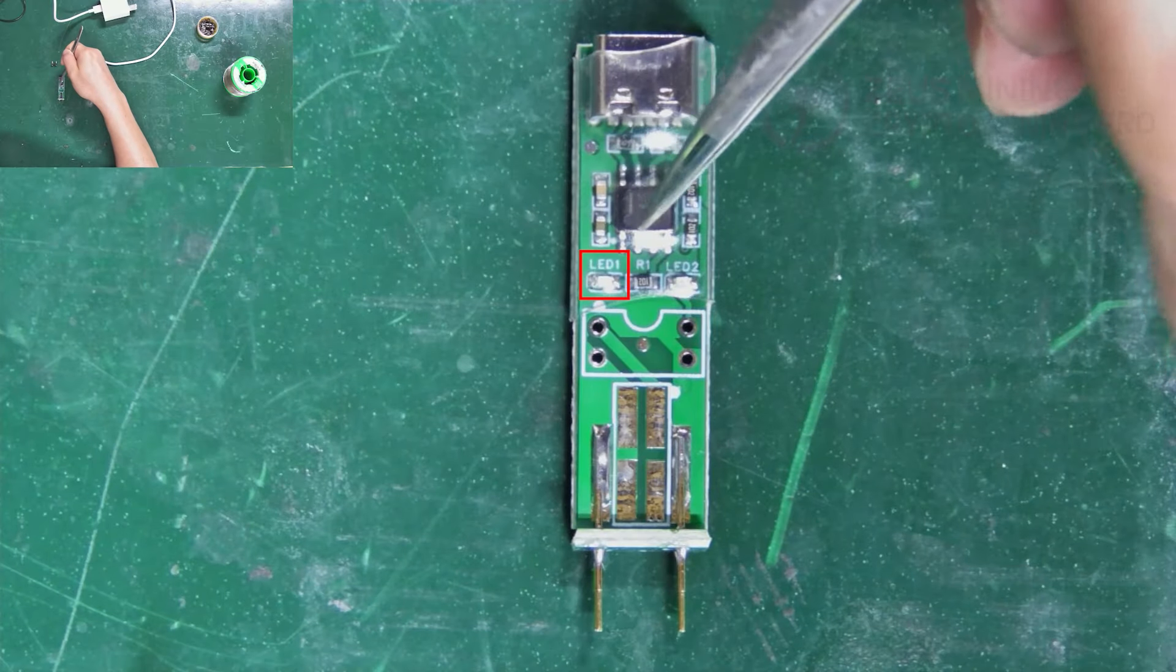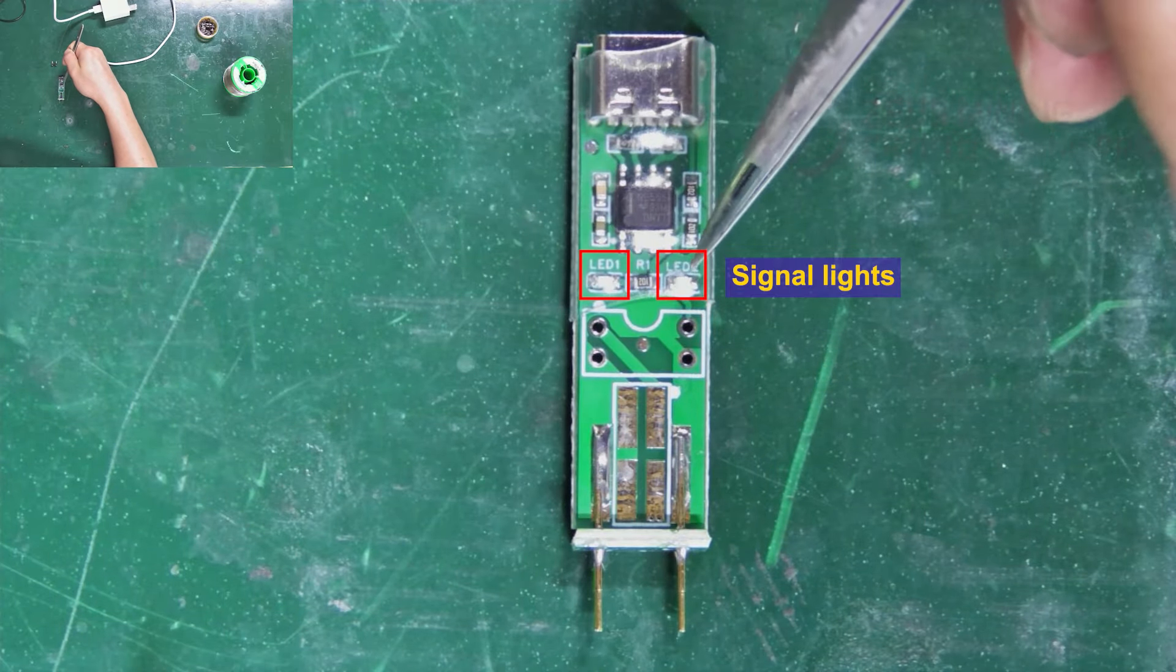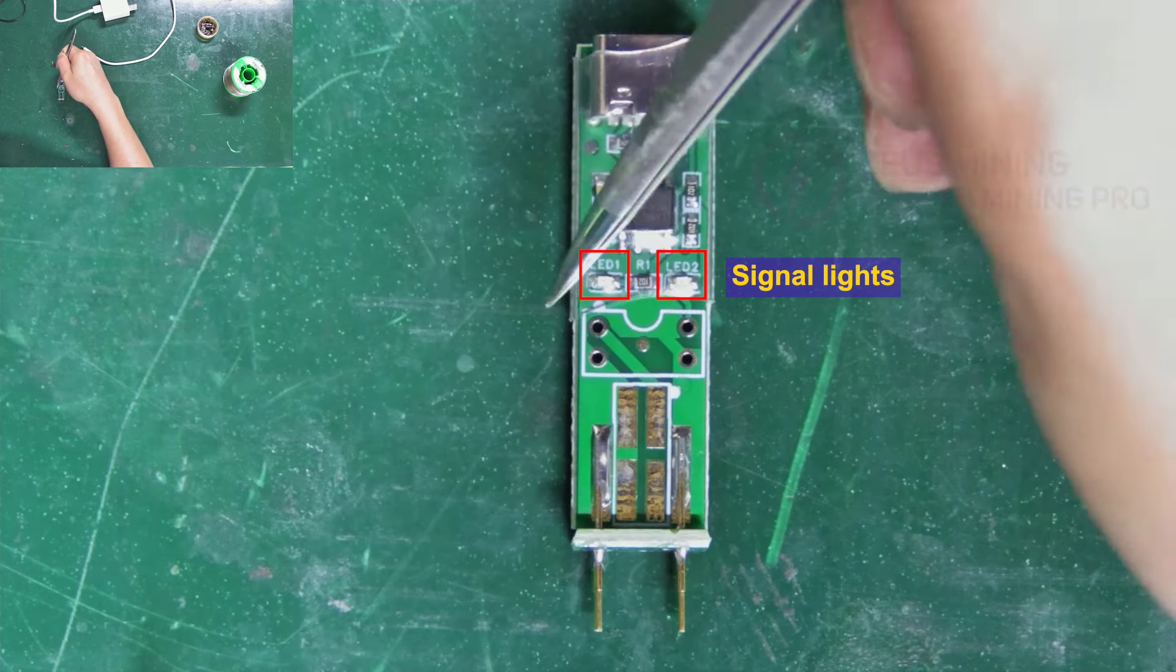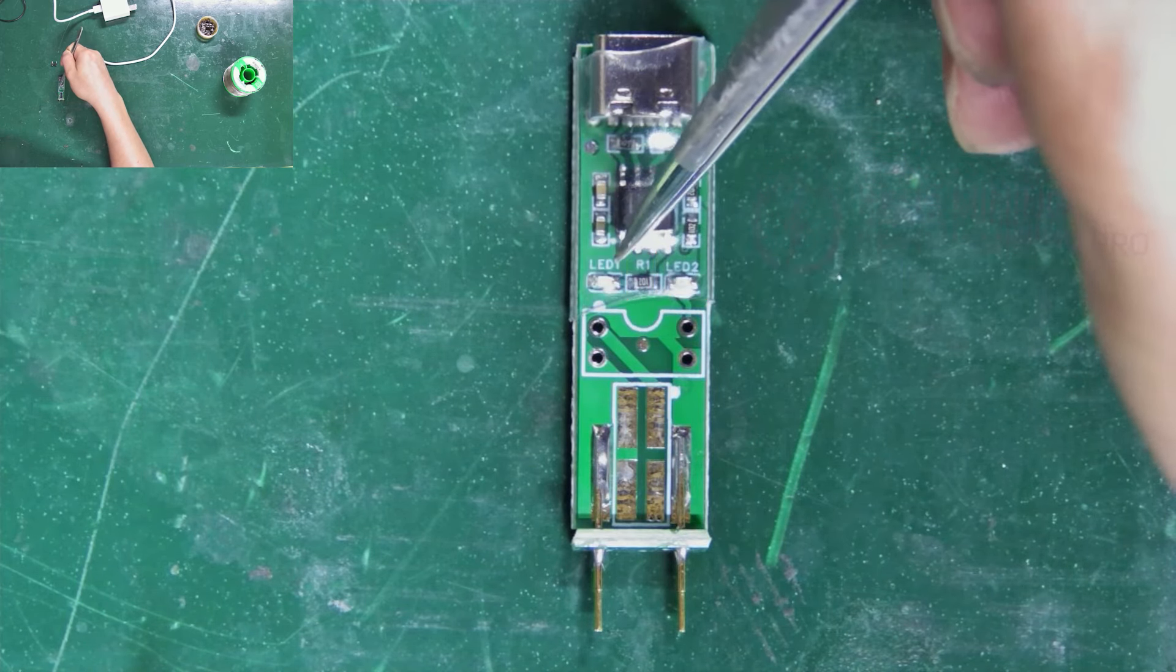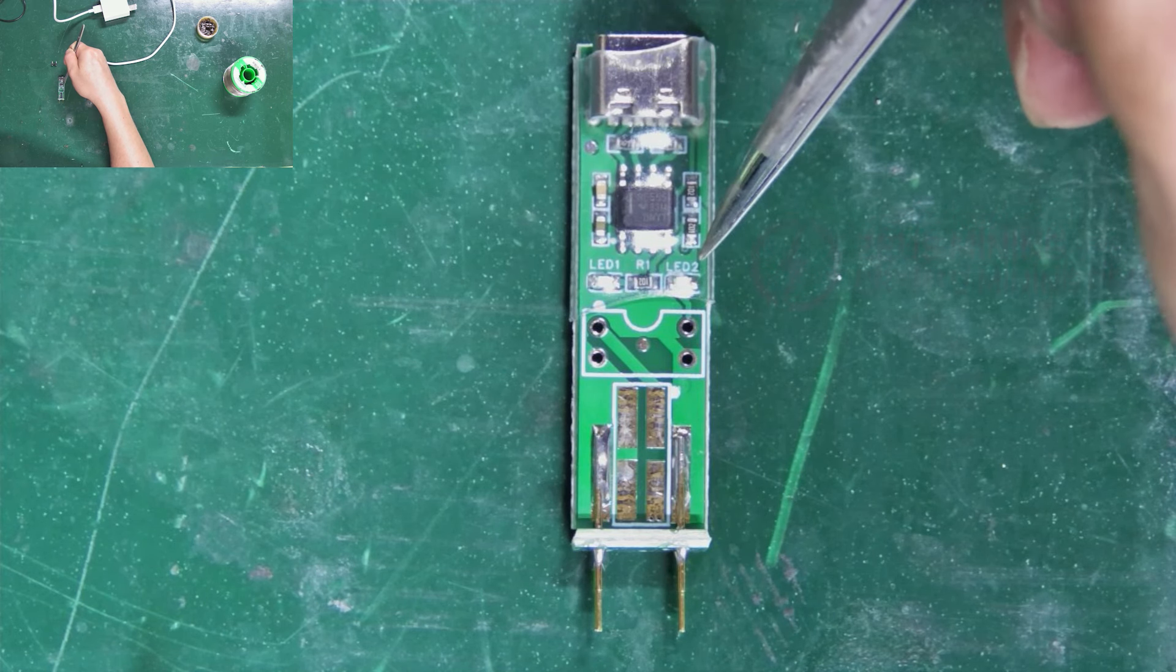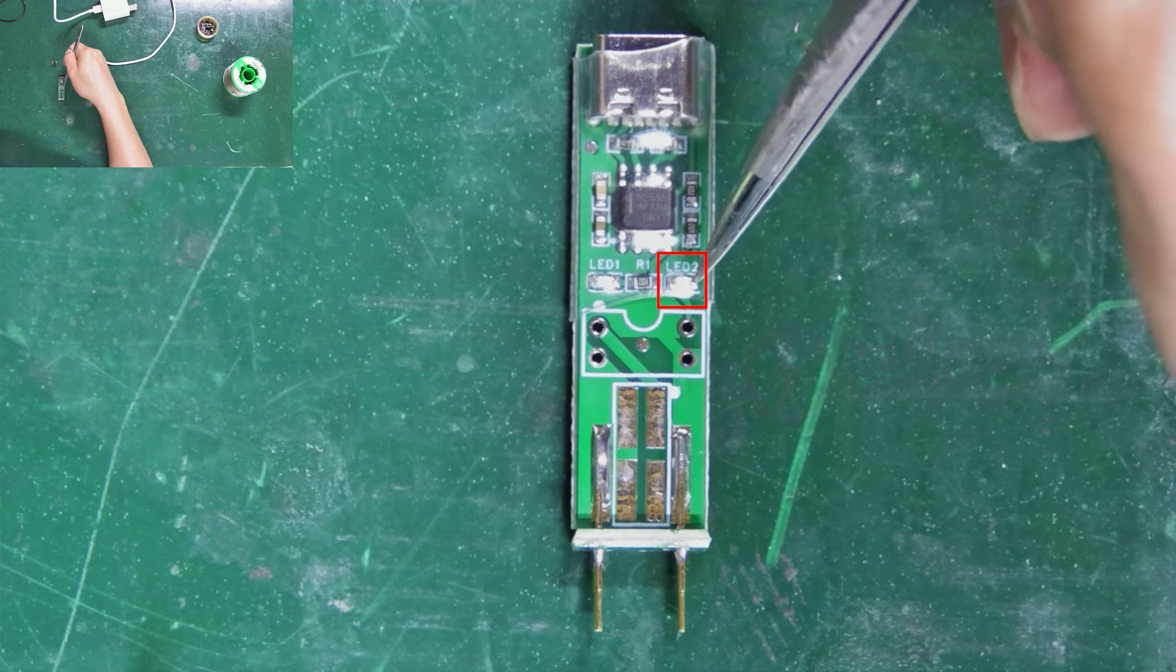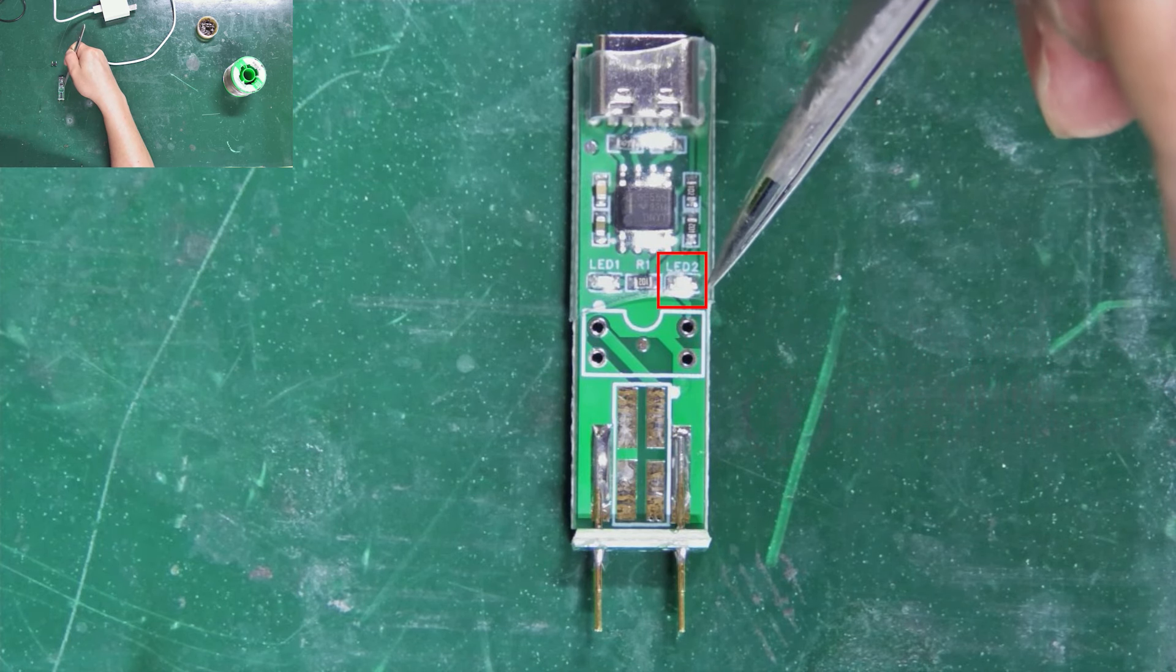The LED1 and LED2 are signal lights. When we power it up, if the light stays on, it means everything's working fine. When we detect the optocoupler, we use LED2 for judgment. If the optocoupler is good, it'll flash. If it stays on or off, the optocoupler might be damaged.